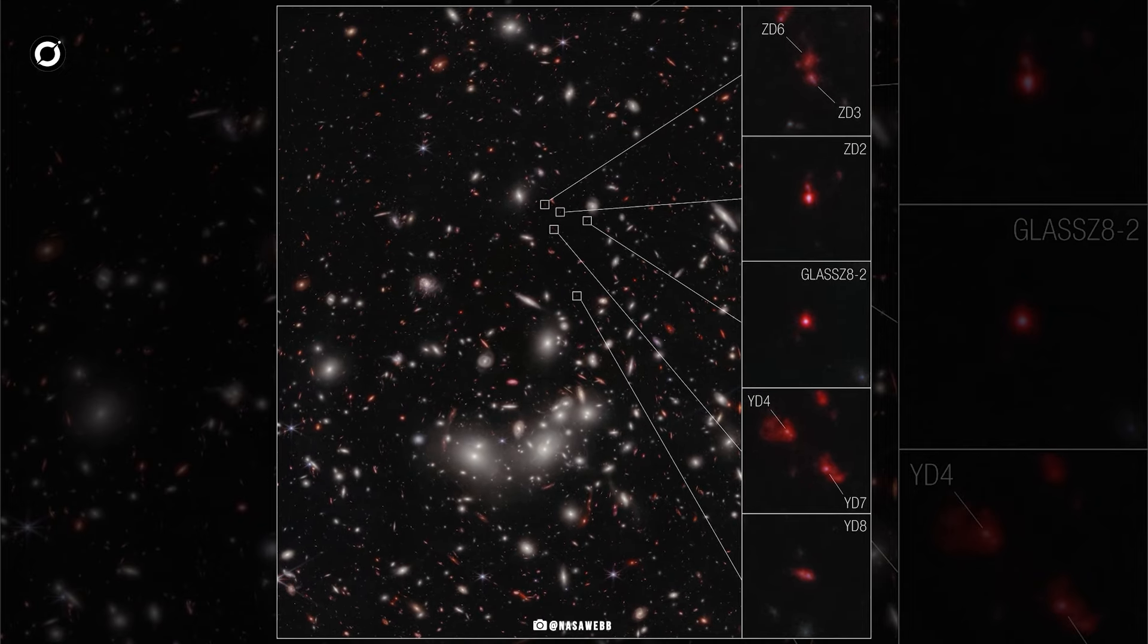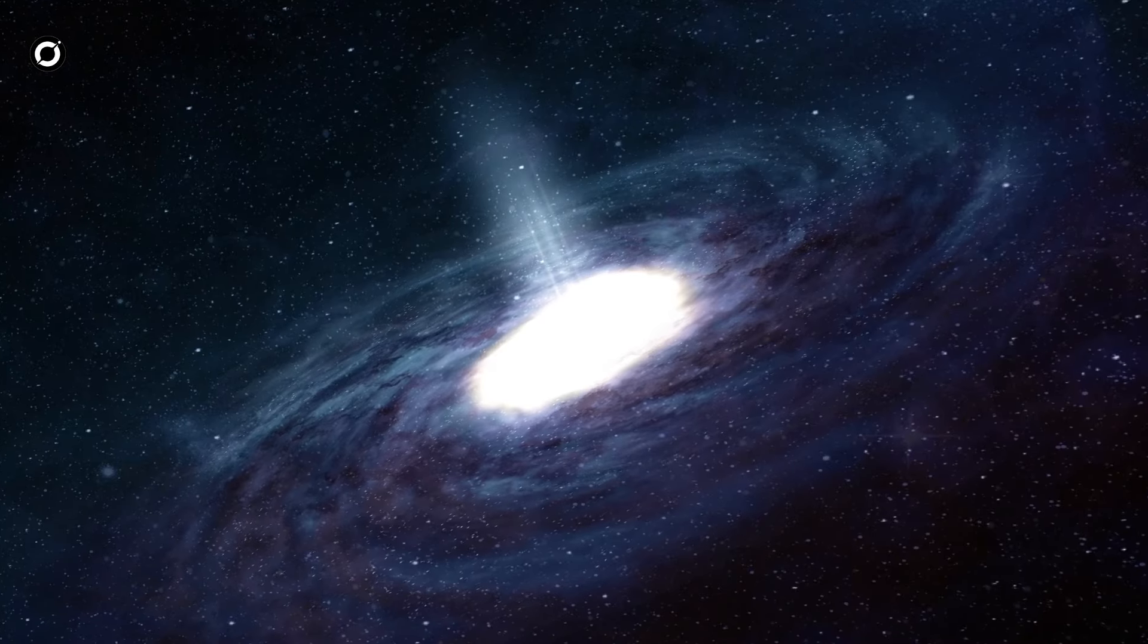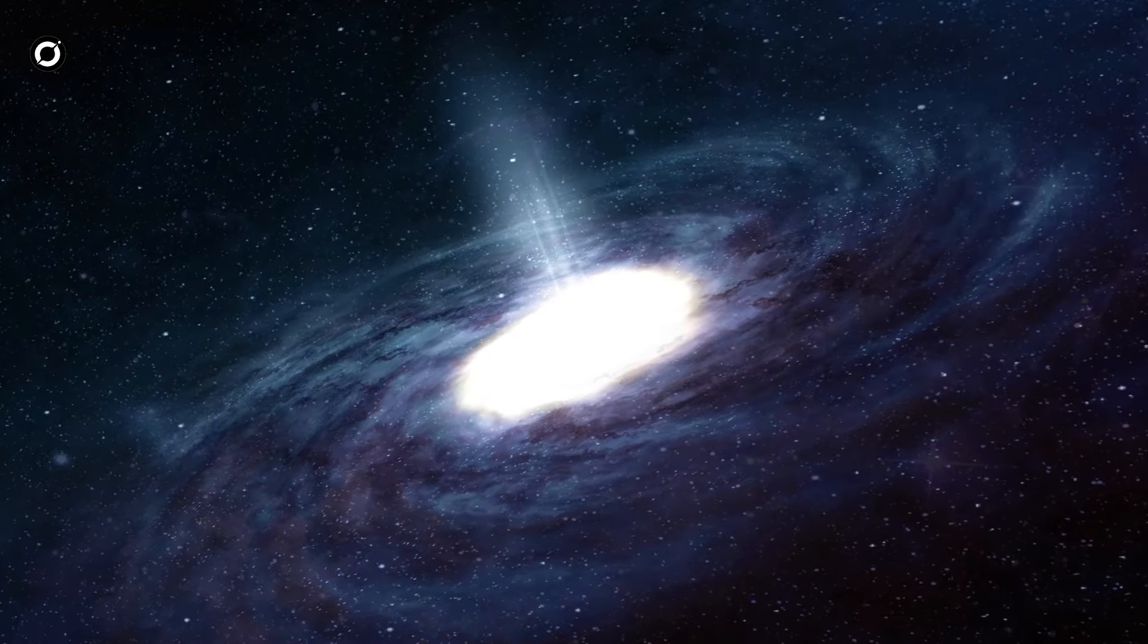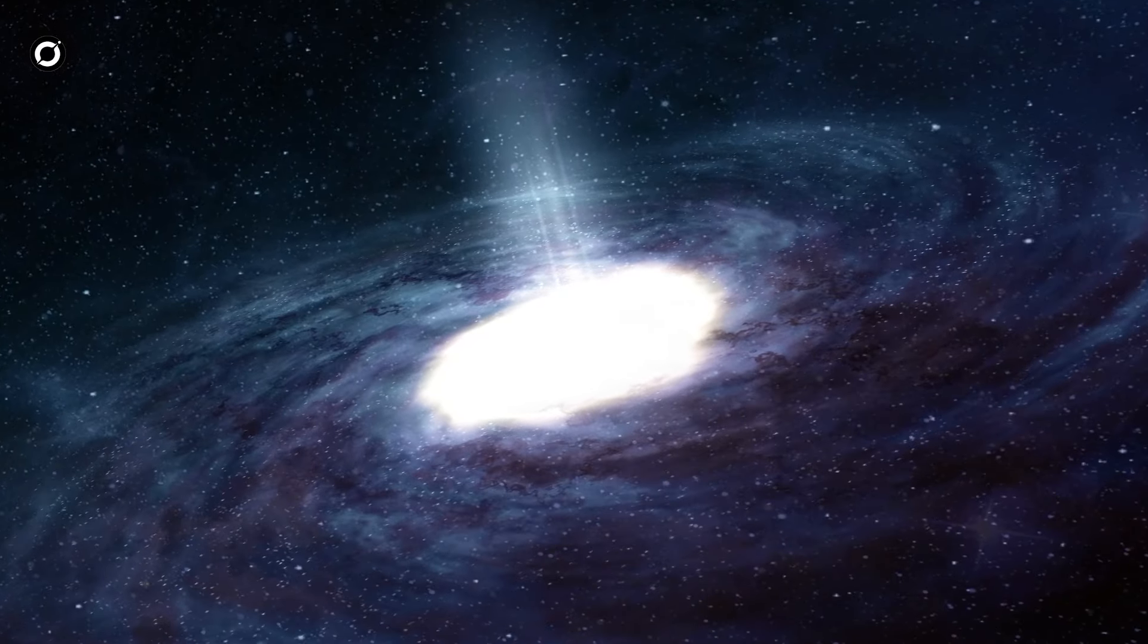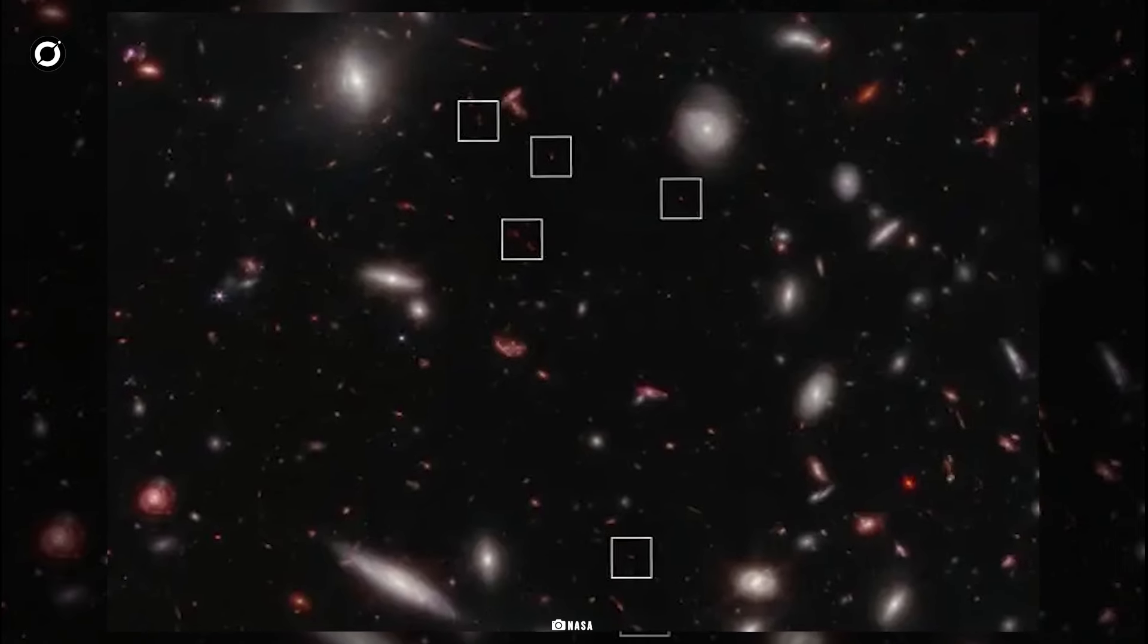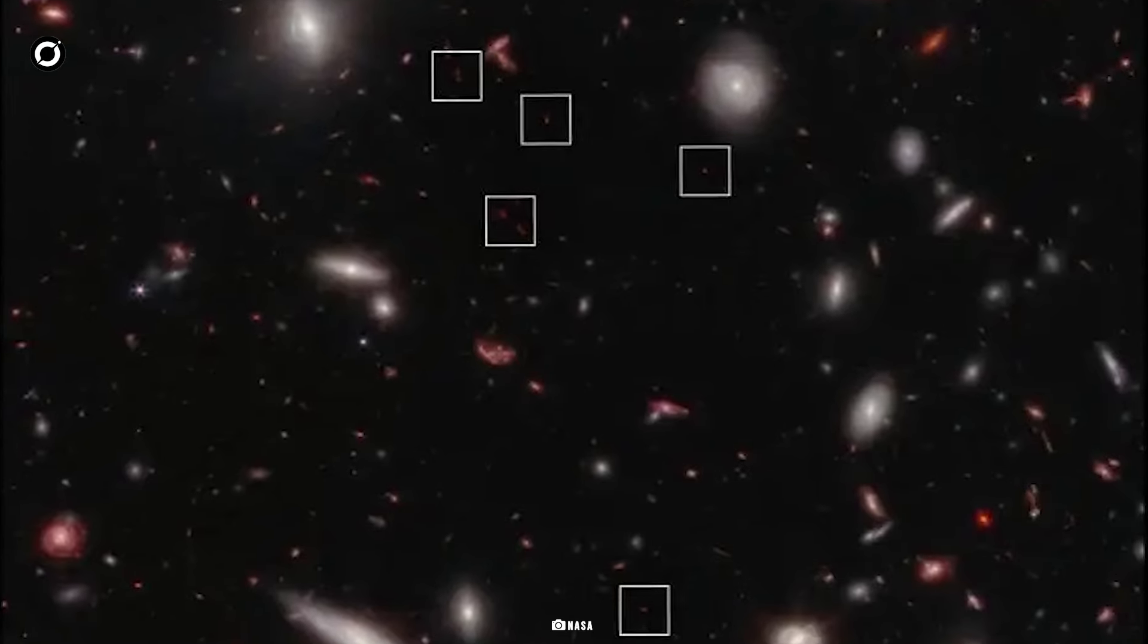As we currently see the protocluster, it appears small. But if its light could reach us instantaneously, letting us see what it looks like today, it is very likely it would be colossal, having gravitationally roped in thousands of other galaxies. The researchers' simulations hint that this protocluster may now be one of the most enormous clusters in the universe.